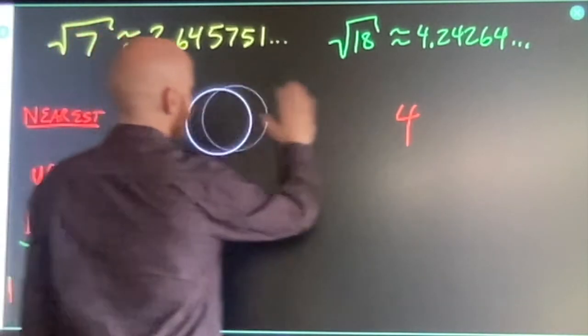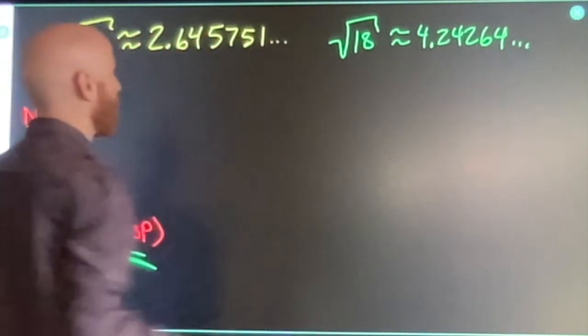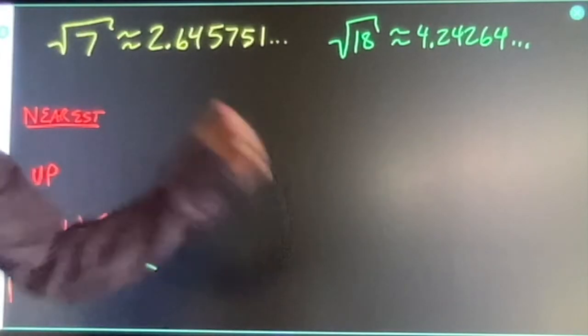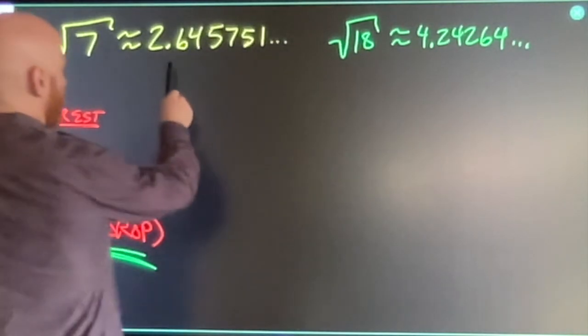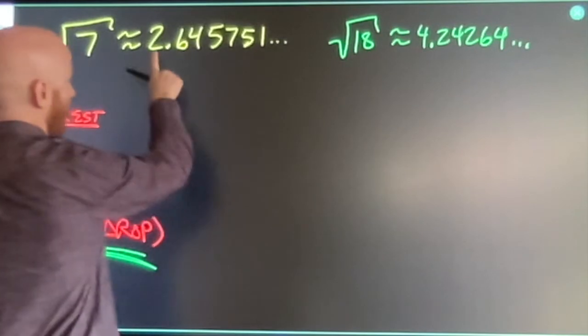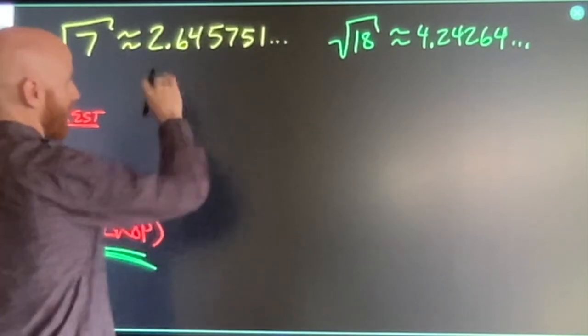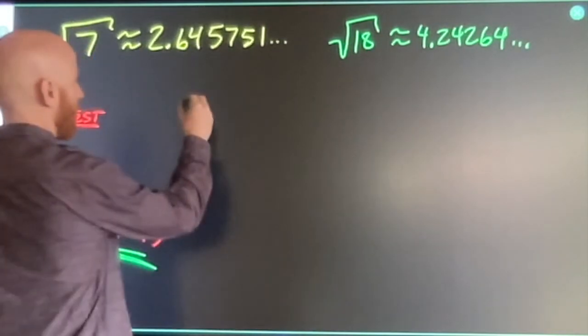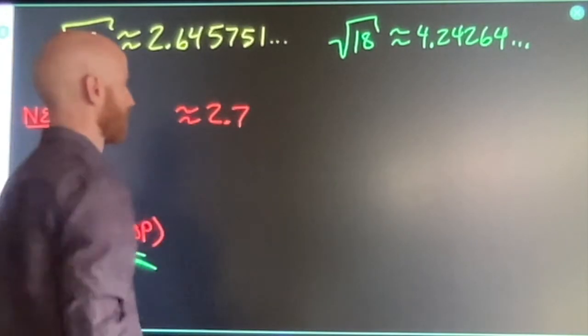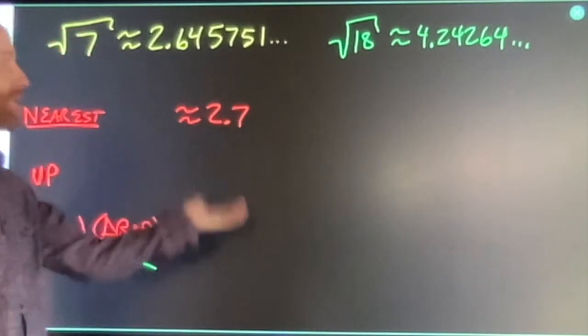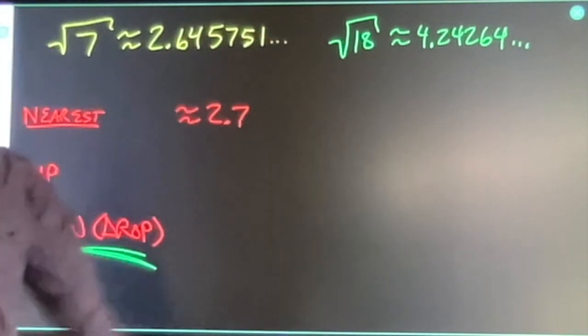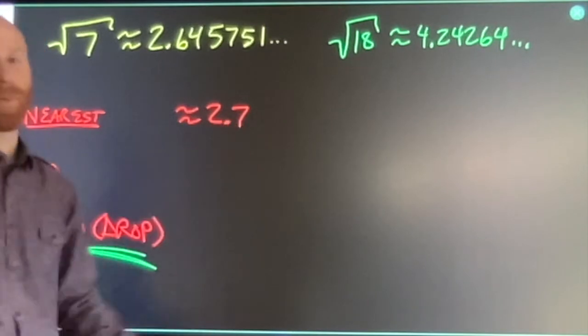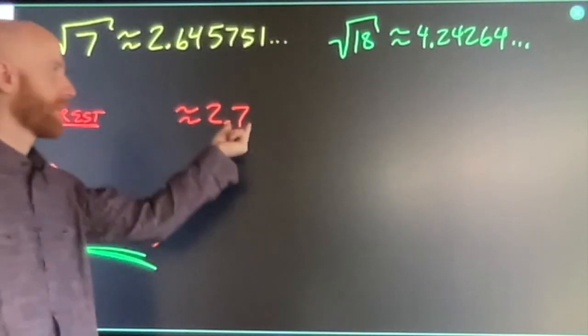Rounding up is going to mean that no matter what follows the digit you care about, you increase the digit you care about by one. So if I say round up to the tenths place, this is two point six and some stuff. I'm going to write two point seven. It's rounding up. Any fraction that follows the digit I care about, we count as one more of that digit.